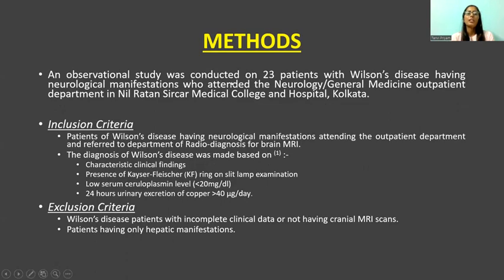Methods: an observational study was conducted on 23 patients with Wilson's disease having neurological manifestations. Inclusion criteria: patients attending the neurology or general medicine outpatient department in Neil Ratan Sarkar Medical College and Hospital referred for brain MRI. Diagnosis was made based on characteristic clinical findings, presence of KF ring on slit lamp examination, low serum ceruloplasmin level, and 24-hour urinary copper excretion of more than 40 micrograms per day. Exclusion criteria included patients with incomplete clinical data, no cranial MRI scans, or only hepatic manifestations.